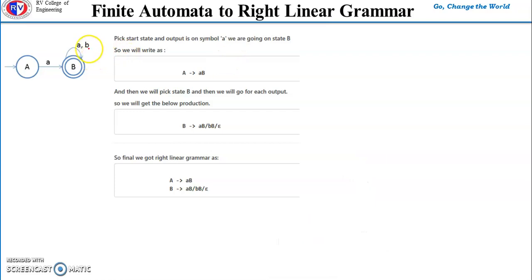When we write the right linear grammar for finite automata, we repeat the process for every state and start from the start state. Here we have two states, which means in grammar we are going to have two non-terminals.